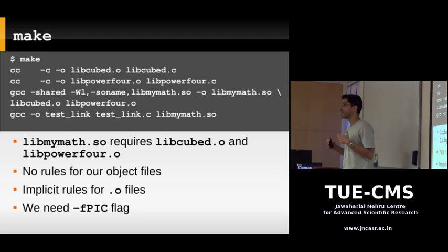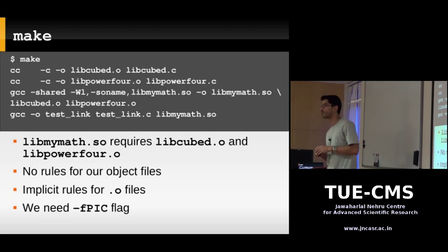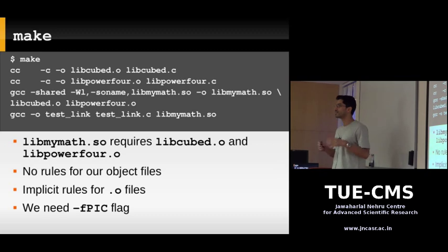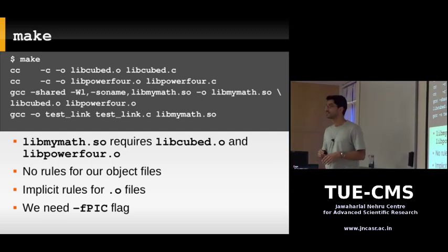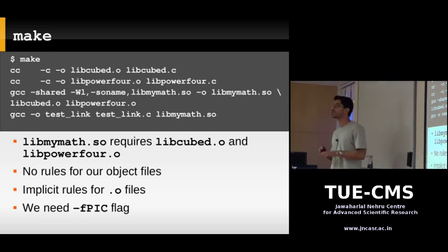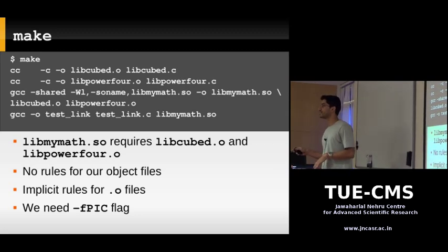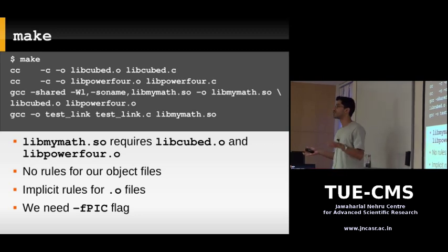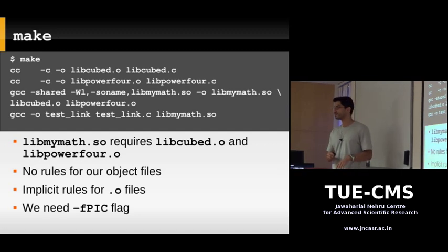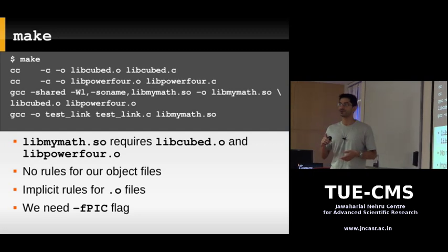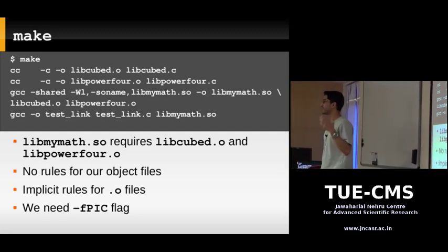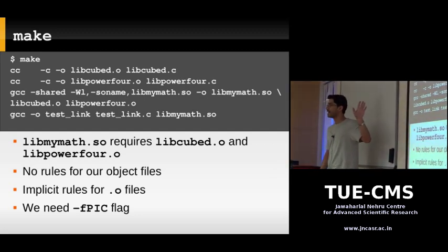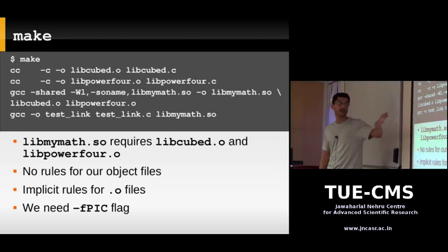Implicit rules are built-in rules you don't need to write explicitly in your makefile. Whenever make sees a dependency on a .o file, it searches for a .c file with the same name and uses the implicit rule to generate the .o file. However, there's a problem: when creating a dynamic library, we need to compile with the -fpic option. Make's implicit rule doesn't know that, so it's running the wrong command.